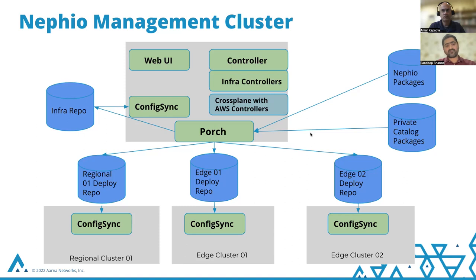There is a repo associated with every cluster, and the Config Syncs in these clusters are configured to sync packages uploaded to their corresponding repos. There is also an infra repo containing infrastructure-related packages — in our example, the KPT package with Crossplane KRM objects. There is a repo with the NEPheo packages themselves — the controllers, Config Sync, and Porch. And private catalog packages contain the raw workload packages. This slide describes all the components that are part of this demo.